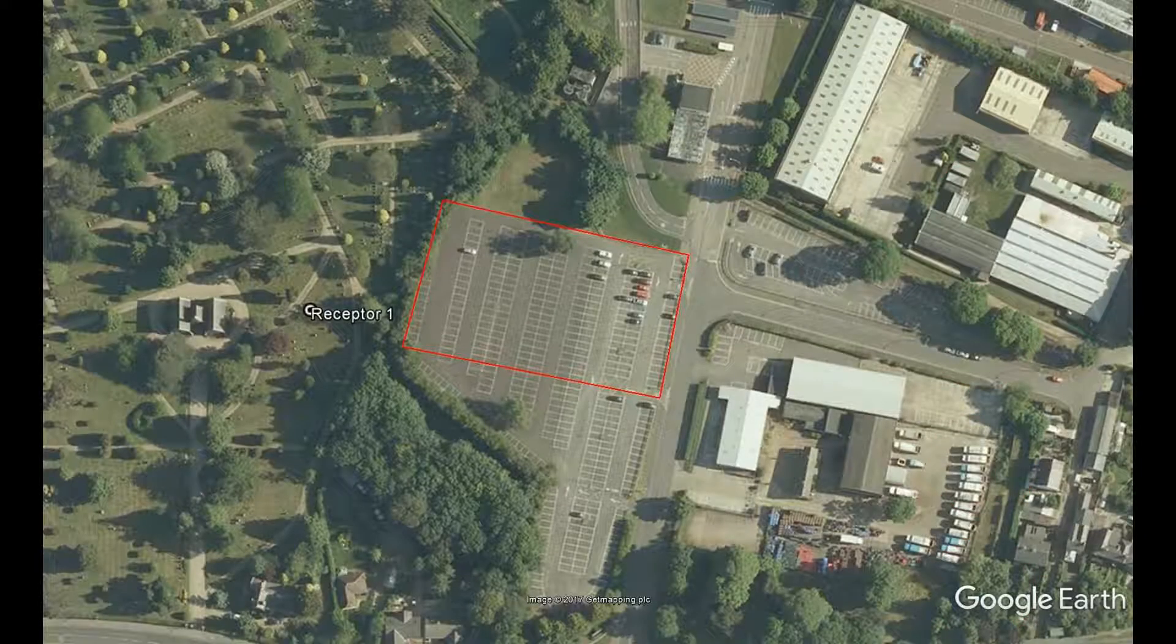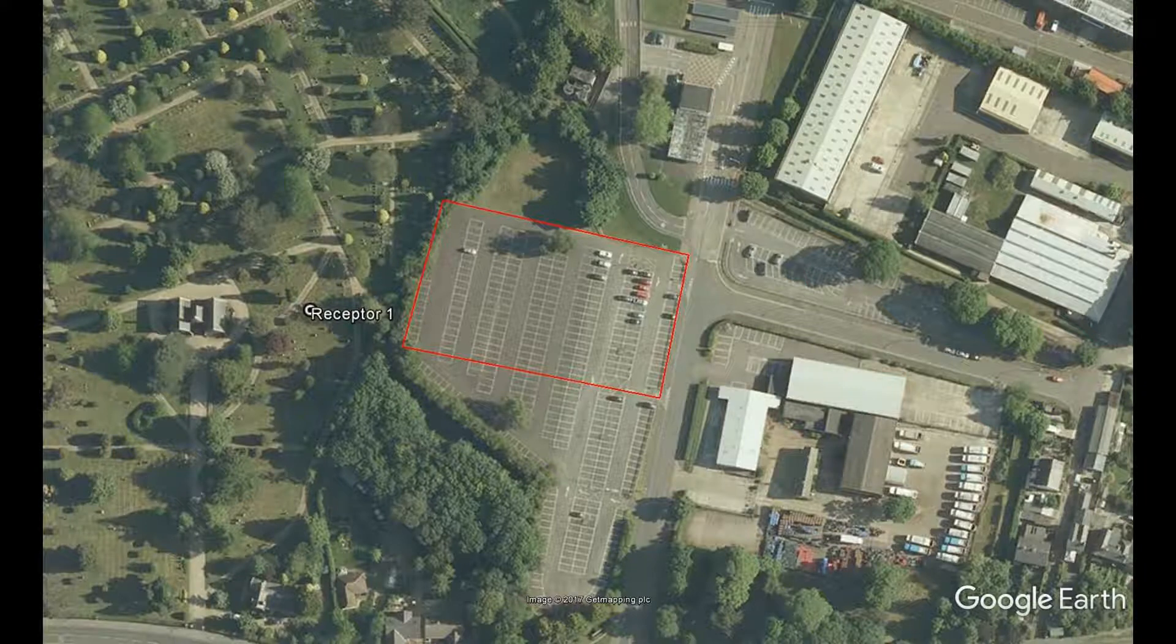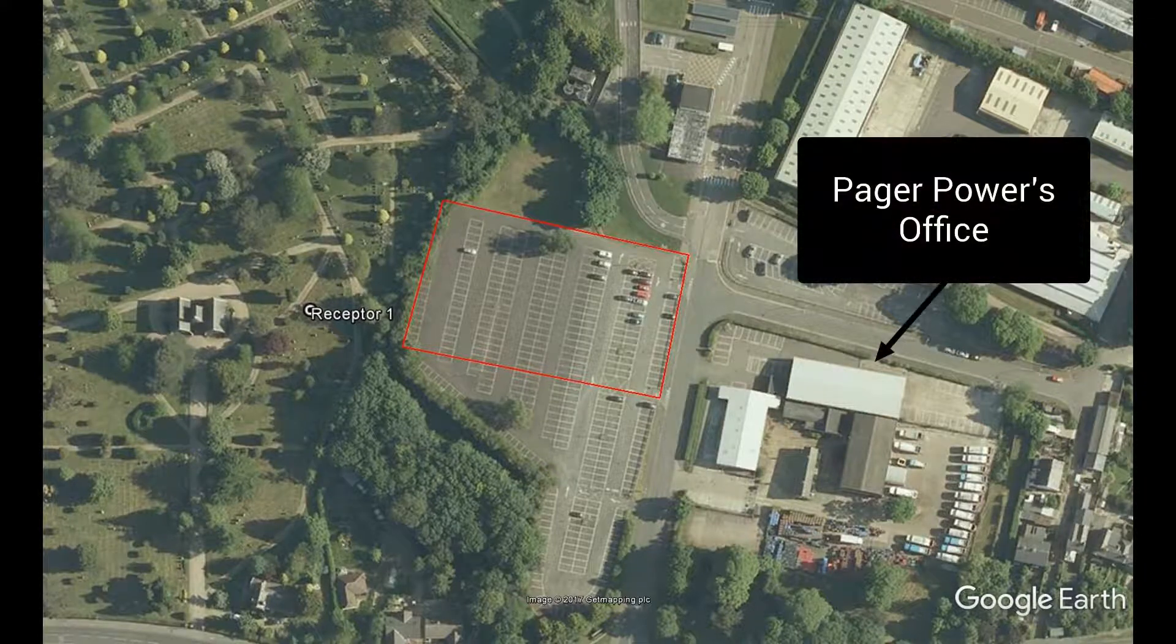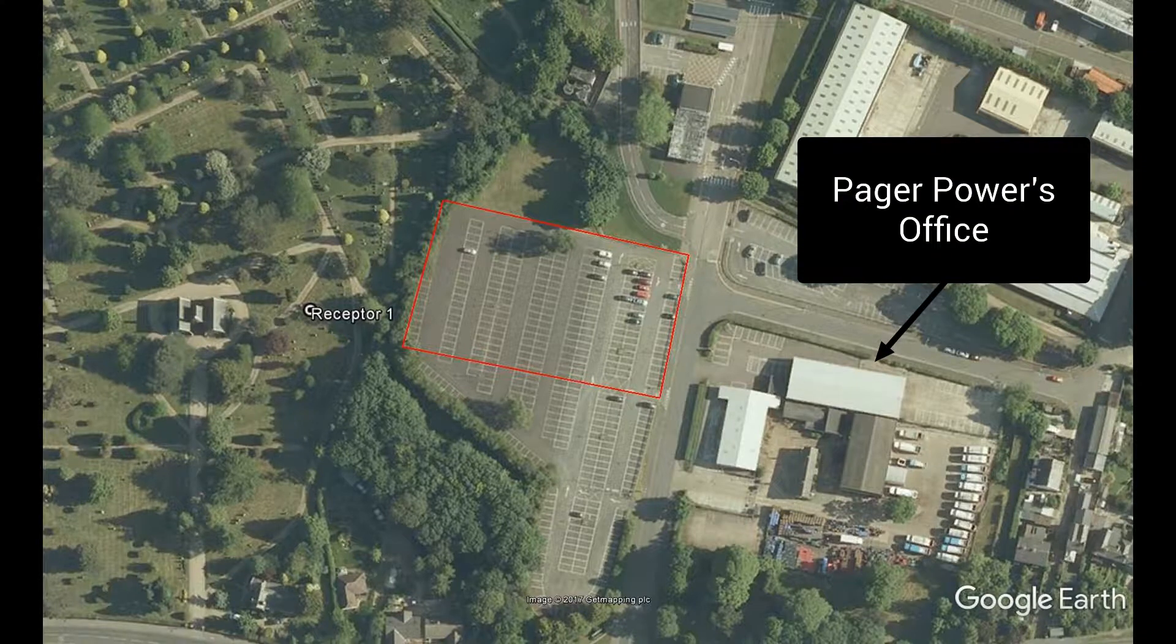The aerial image shows the modelled solar panel reflector area in red and a single receptor location to the west. This solar panel area has been modelled to produce the following chart.